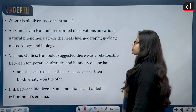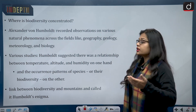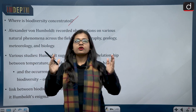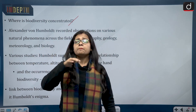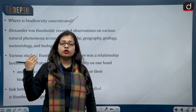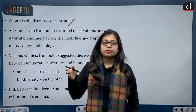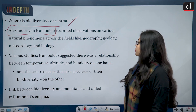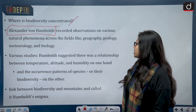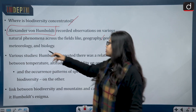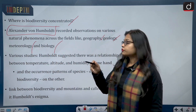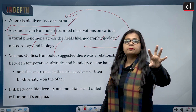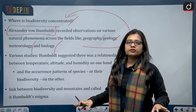The question that has been asked over the years is: where is biodiversity concentrated? Many scientists and environmentalists worked on this question, one of whom was Alexander von Humboldt. He recorded observations on various natural phenomena across fields like geography, geology, meteorology, and biology, working to find out whether biodiversity is concentrated at a single place or at diverse places.